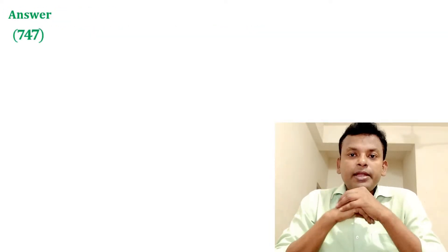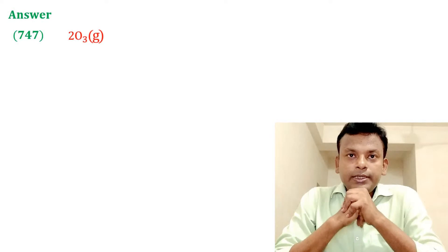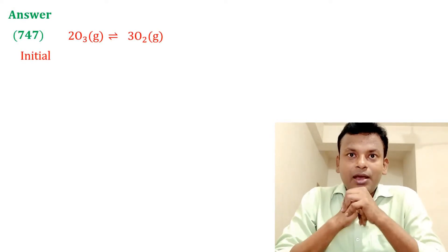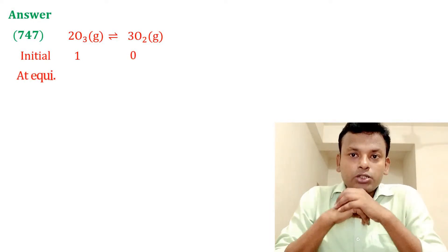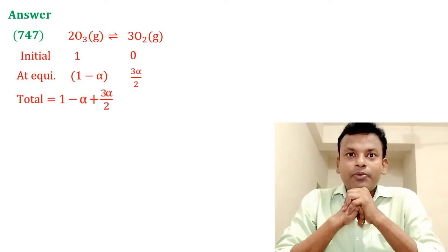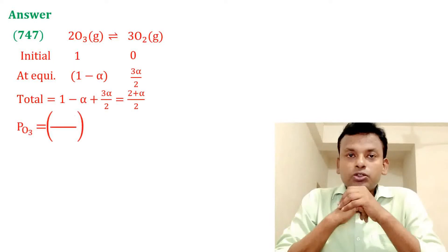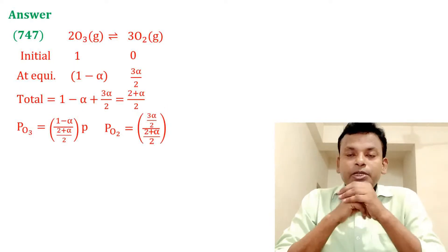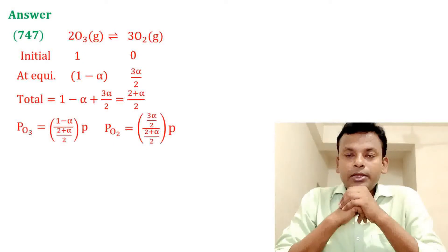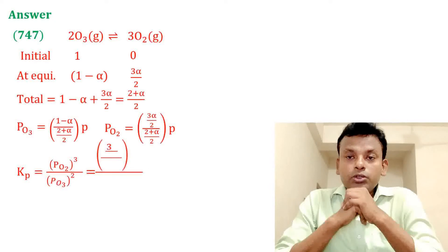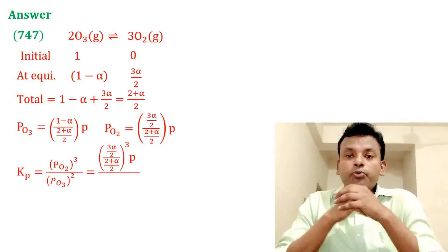Answer is 747. 2O3 gives 3O2. Initially 1 and 0; at equilibrium: (1 − α) and 3α/2. Total moles equal 1 − α + 3α/2 equals 1 + α/2. P(O3) equals (1 − α)/(1 + α/2) times P. P(O2) equals (3α/2)/(1 + α/2) times P. Kp equals P(O2) cubed divided by P(O3) squared.